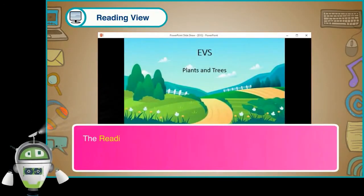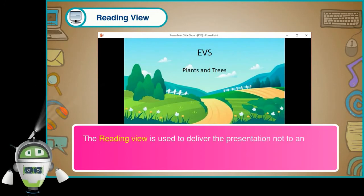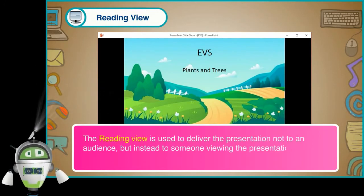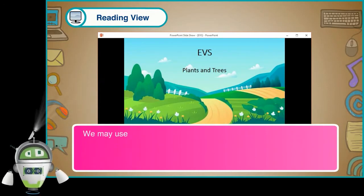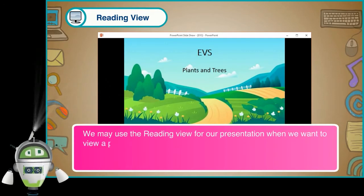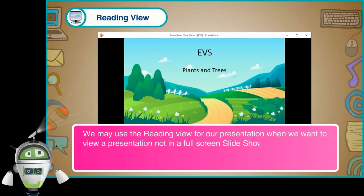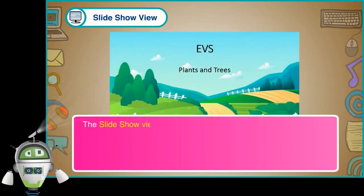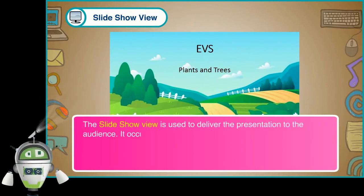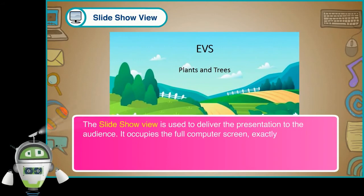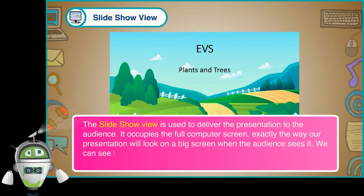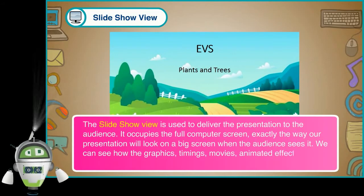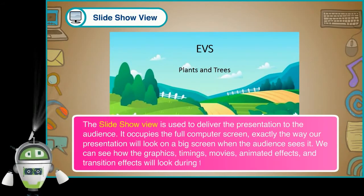Reading View: The reading view is used to deliver the presentation not to an audience but to someone viewing the presentation on their own computer. We may use it when we want to view a presentation not in a full-screen slideshow view. We can always switch from the reading view to another view to change the presentation. Slideshow View: The slideshow view is used to deliver the presentation to the audience. It occupies the full computer screen exactly as the presentation will look on a big screen. We can see how graphics, timings, movies, animated effects and transition effects will look during the actual presentation.